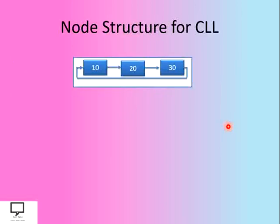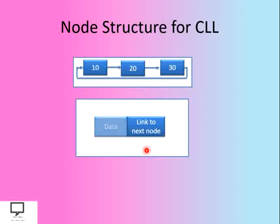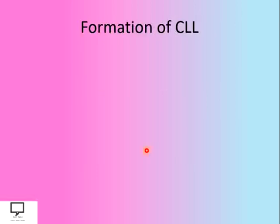Now let's see the node structure of a circular linked list. It is just the same as the singly linked list, so the node structure is also the same. The node is divided into two parts: the first is the data part, which holds the information of that node, and the second is a link to the next node, which holds the address of the next node.